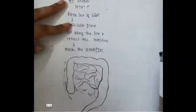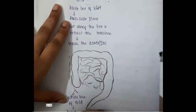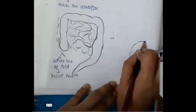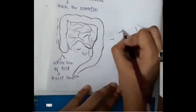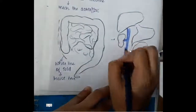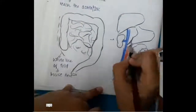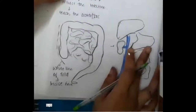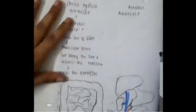Once you incise along the white line of Toldt and retract the bowels to one side, the inferior vena cava and right kidney are mainly exposed. Sometimes the aorta can be seen, but the primary structures exposed by the Cattell-Braasch manoeuvre are the inferior vena cava and the right kidney.